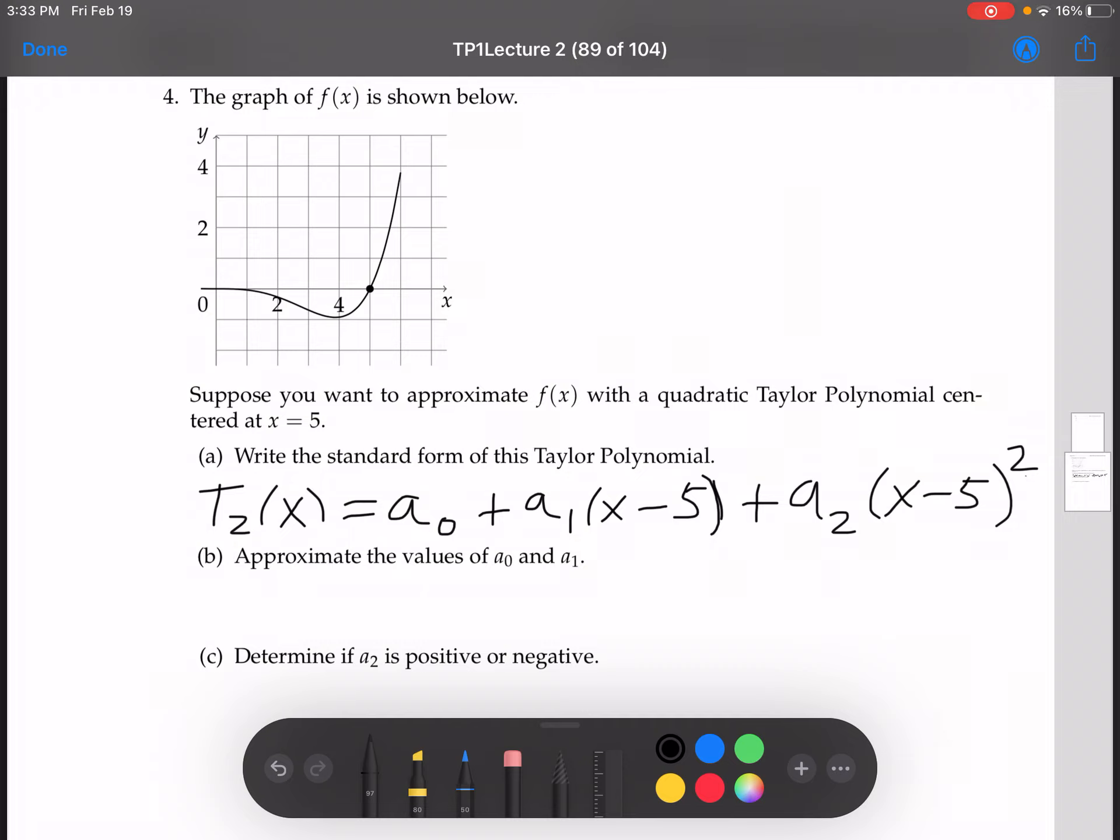Now, for part B, we want to approximate the values of a0 and a1. So using our formula for the coefficients of a Taylor polynomial, this formula being an equals f to the nth derivative of the center c over n factorial. Remember that, so one thing to take note of is that this fn there, if you just have like 3 there, that means that's the function cubed. But if you put it in these little parentheses there, that's the third derivative.